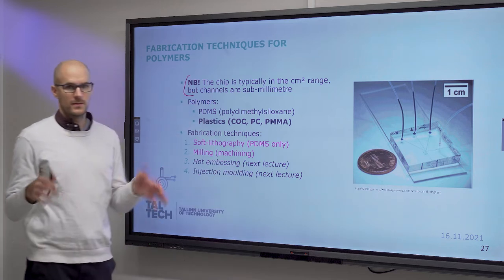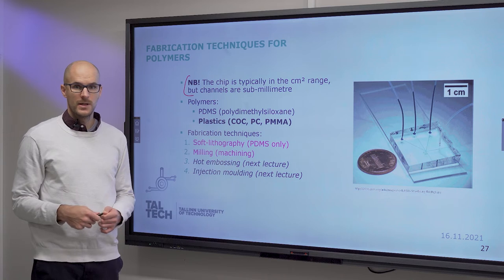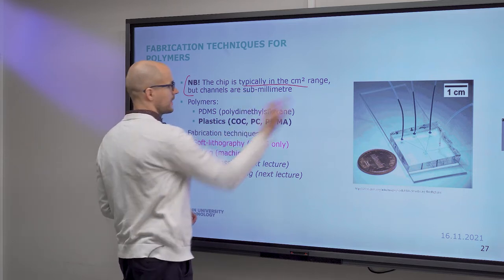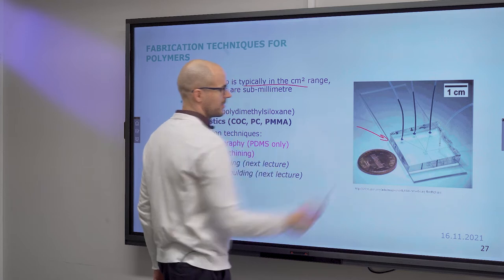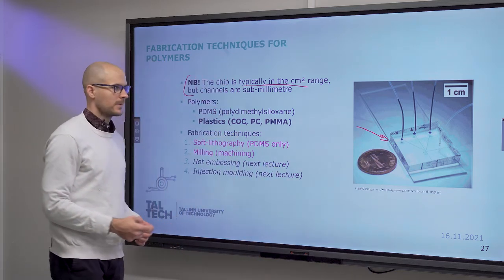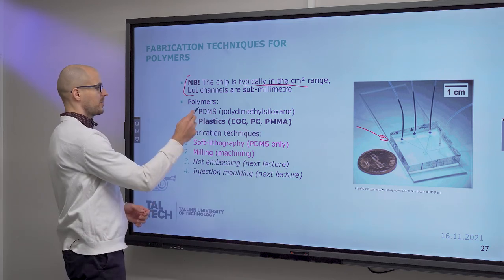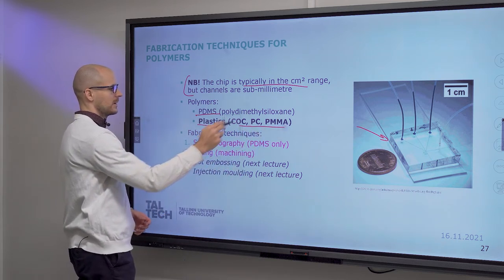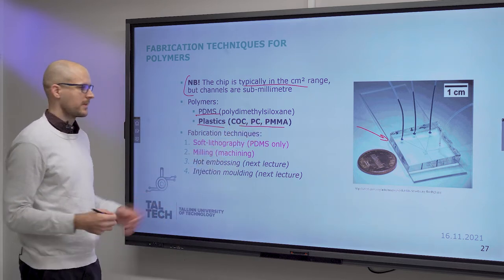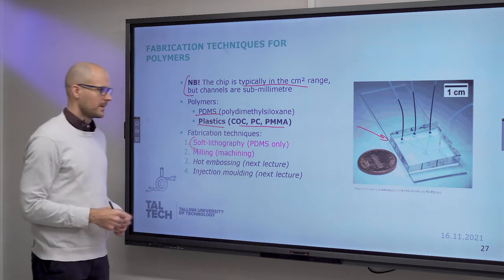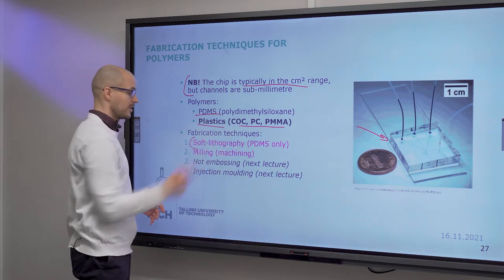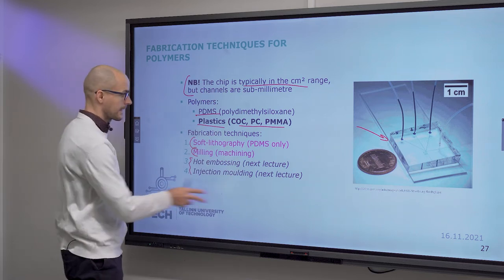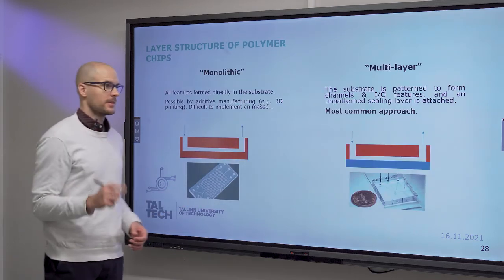So the chip, again, just as a reminder, is in the submillimeter domain. Channels are typically a couple hundred microns across. The chip itself is in the square centimeter range. So this one would be a typical chip size that you see here. Look at the scale. And under polymers, we usually talk about PDMS and plastics. And these are very commonly used plastics. So cyclic olefine co-polymer, polycarbonate, PMMA is acrylic glass or polymethyl methacrylate. Fabrication techniques, soft lithography, we will talk about that. That's only for PDMS. Milling or machining, we talk about that too. The other two things, next lecture. Well, not the next lecture, but the fabrication 2 lecture.